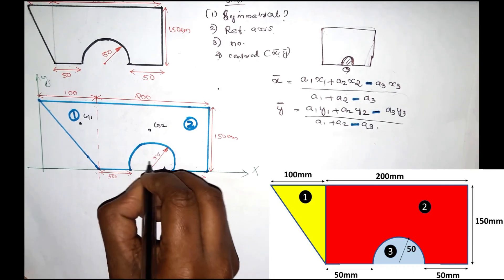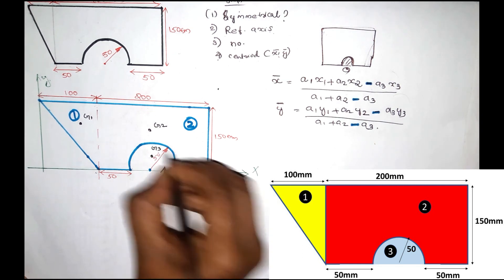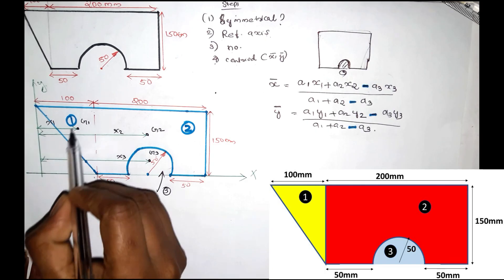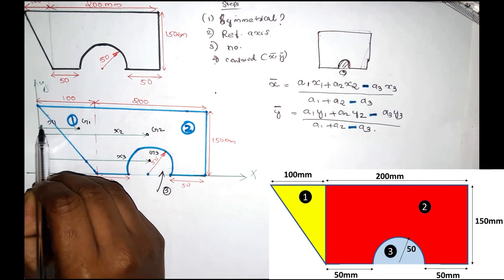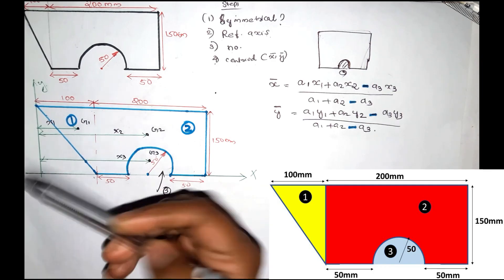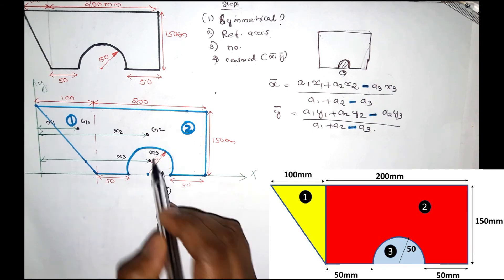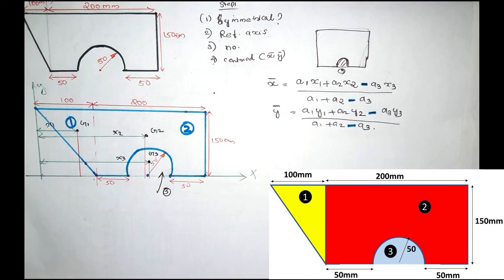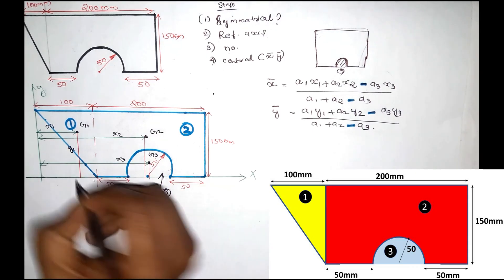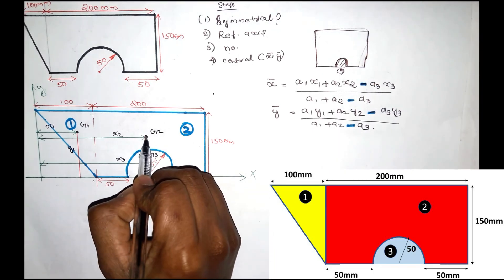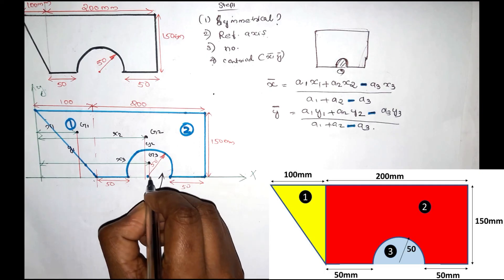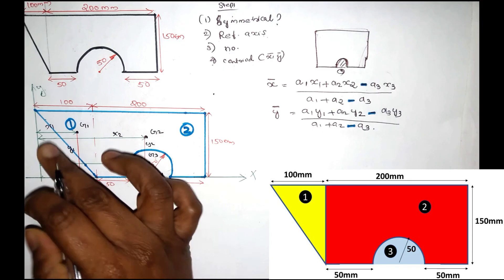In the semicircle, we have G3. This will be X1, X2, X3. X1 is the horizontal distance of the first section (triangle). X2 is the horizontal distance from the Y axis to G2. X3 is the horizontal distance to G3 of the semicircle. This is Y1, Y2, and Y3 — the vertical distances of G1, G2, and G3 respectively.